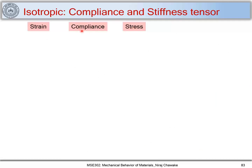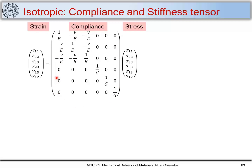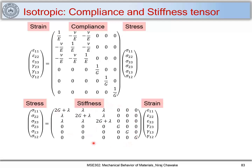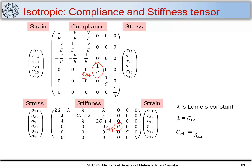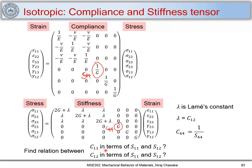We have the strain-to-stress relation using the compliance tensor for isotropic materials. Similarly we can find the stress-to-strain relation through the stiffness tensor. In the stiffness tensor, λ is called the lambda constant and λ = C₁₂. Comparing the stiffness tensor to the compliance tensor, we can find relations: C₄₄ = 1/S₄₄. I'd like you to also find C₁₁ in terms of S₁₁ and S₁₂, and C₁₂ in terms of S₁₁ and S₁₂.